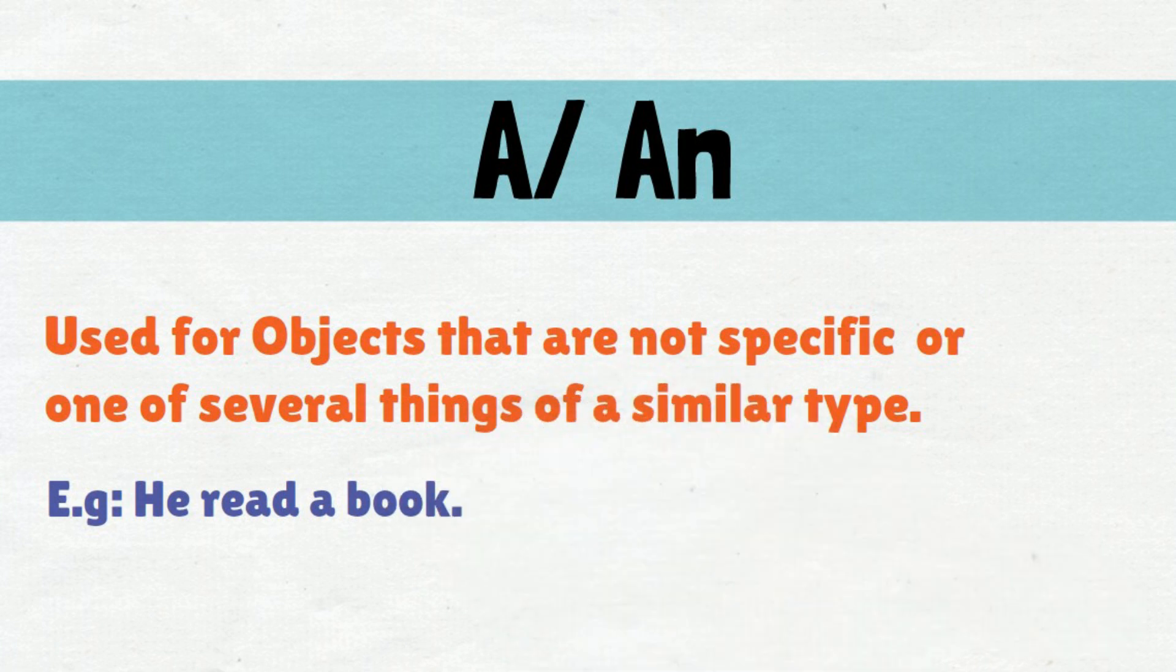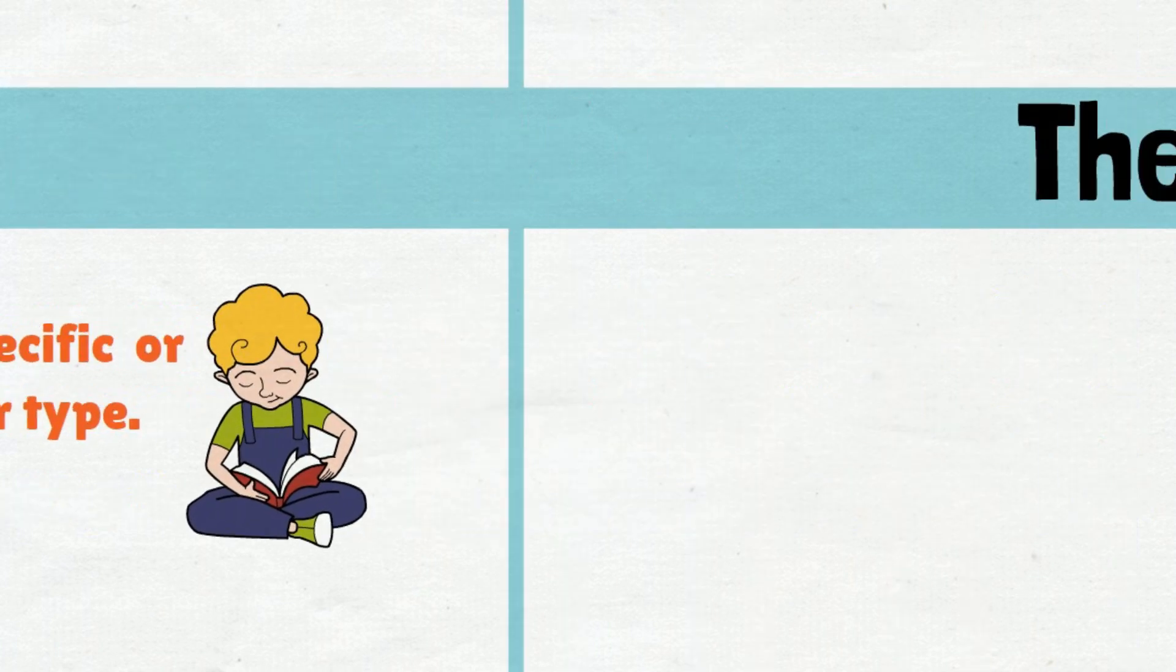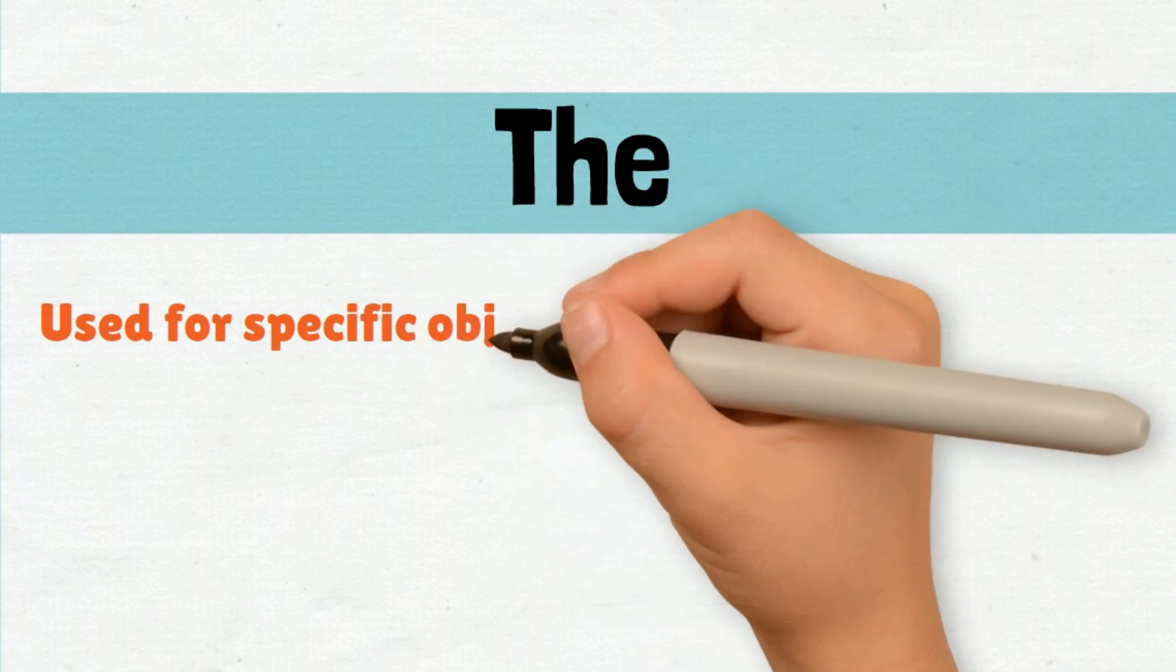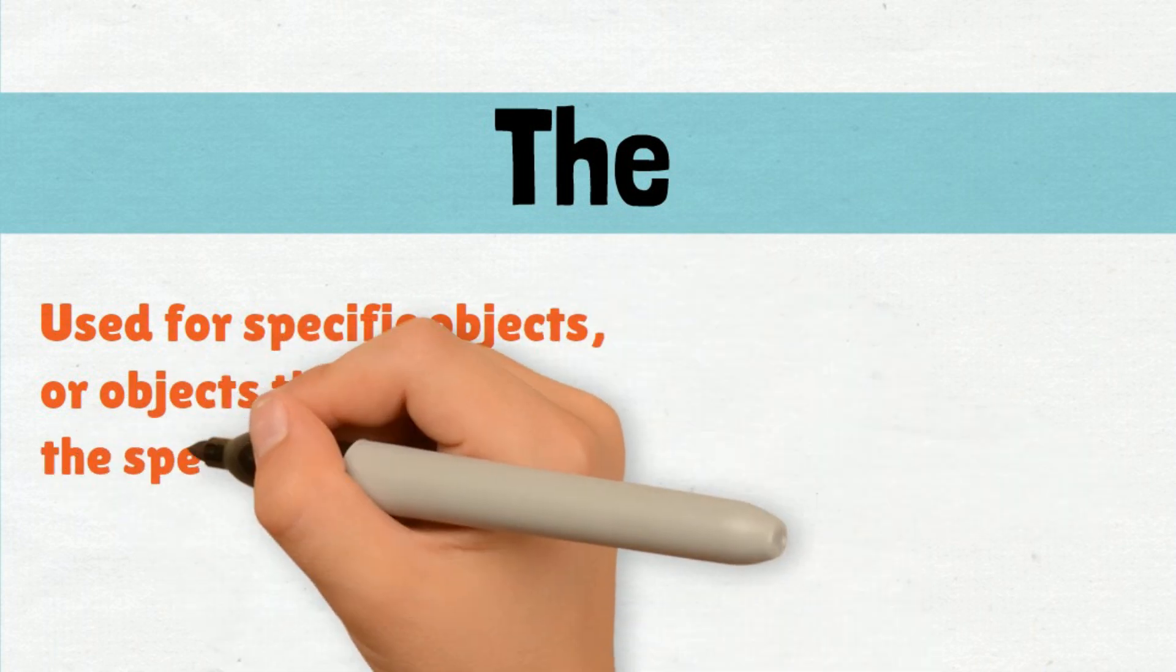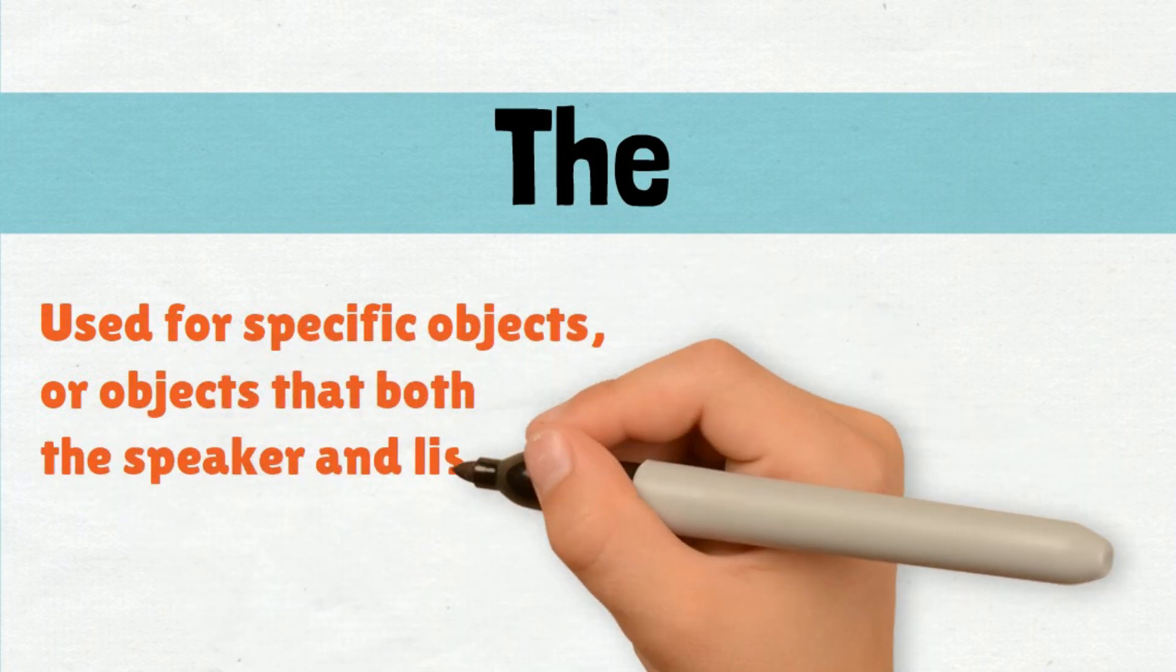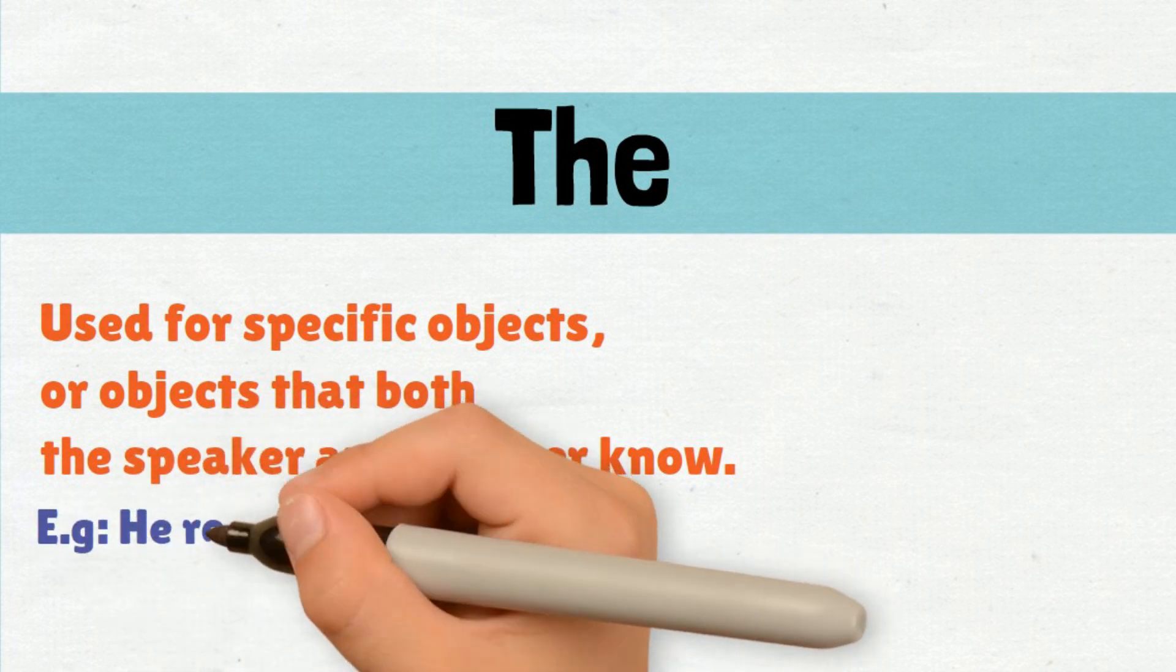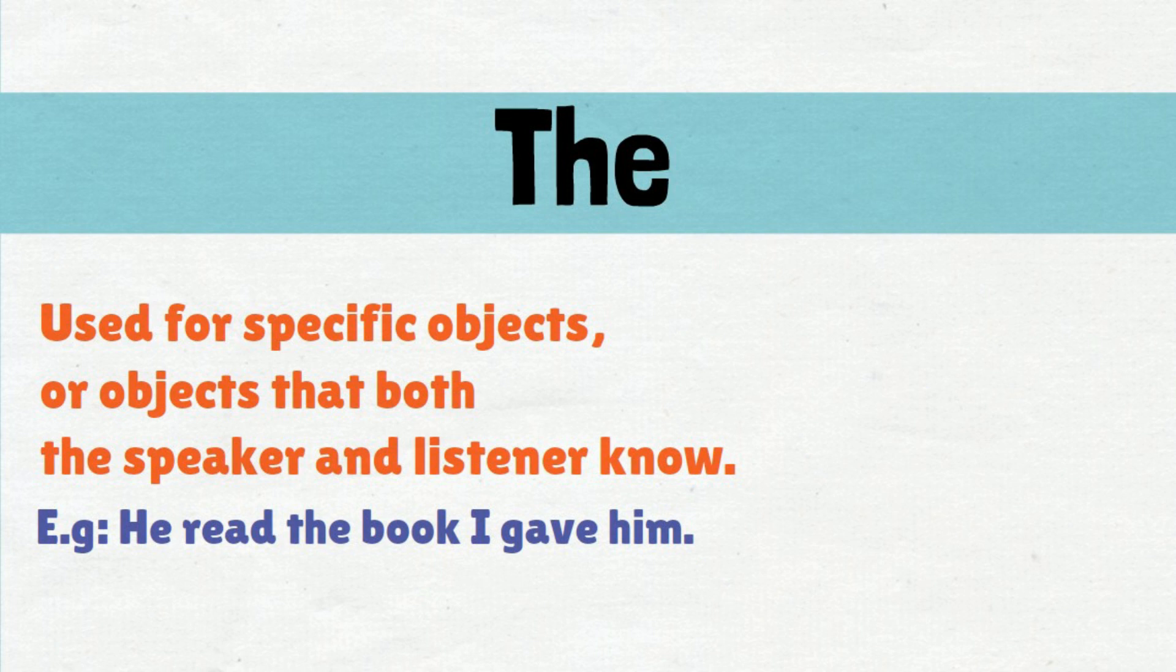Example: He read a book. The is used for specific objects, or objects that both the speaker and listener know. Example: He read the book I gave him.